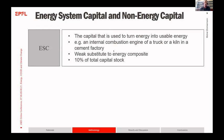We disaggregate the capital stock into two types. First, we have energy system capital — the capital used to turn energy into usable energy, such as an internal combustion engine of a truck or a kiln in a cement factory. For this capital we assume weak substitutability to energy. We assumed this to be roughly 10 percent of the total capital stock, which is appropriate given that the majority of capital in Switzerland is used in structures, machines, and equipment.